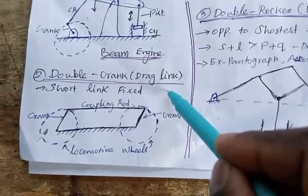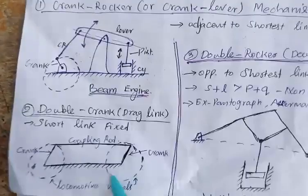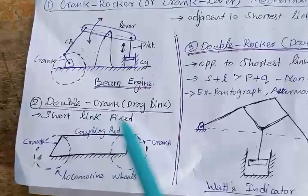The next inversion is the double crank or drag link mechanism. Here the shortest link is fixed. When the shortest link is fixed, we obtain the double crank or drag link mechanism. An example of this is the coupling rod of a locomotive — in a rail engine, we have this kind of mechanism.